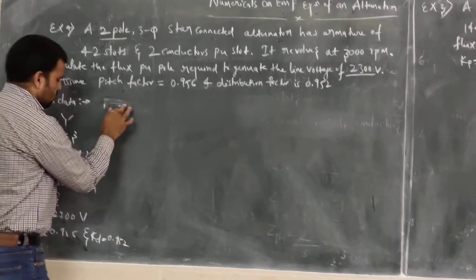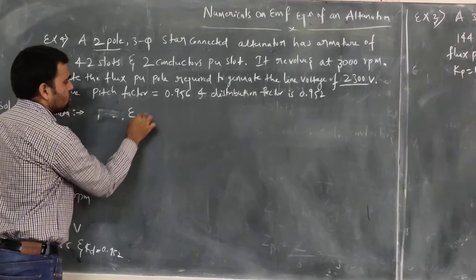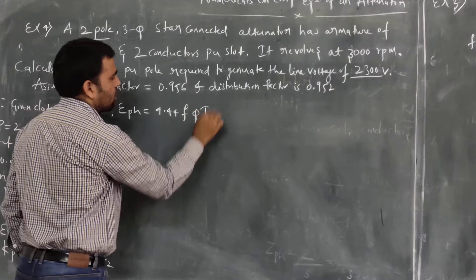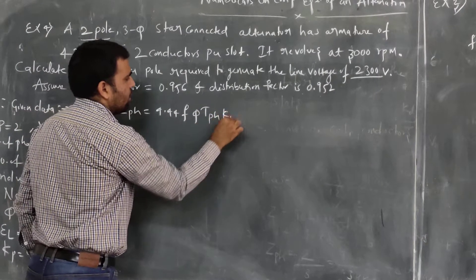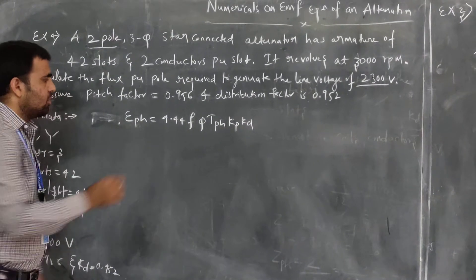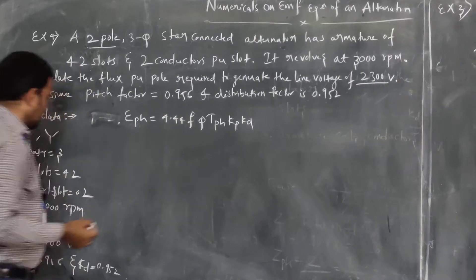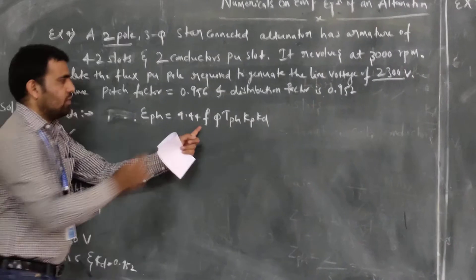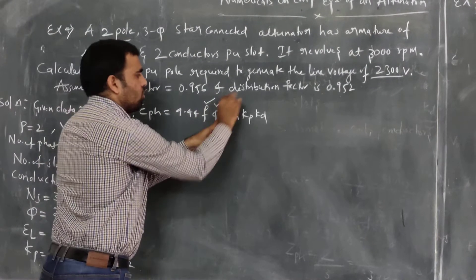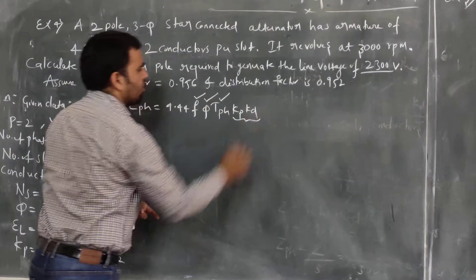Now, the first step: if you want to calculate the flux, the equation is EPH = 4.44 × F × φ × TPH × Kp × Kd. This is our main equation. Now, 4.44 is a constant; frequency F is not given, so we need to calculate it; φ, the flux per pole, we need to calculate; TPH we also don't know. Kp and Kd are already given.